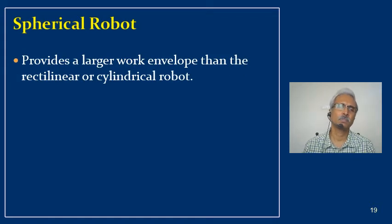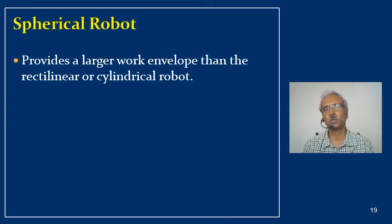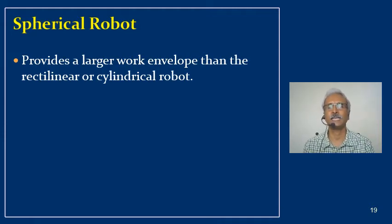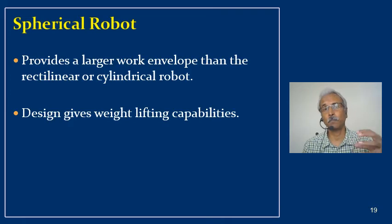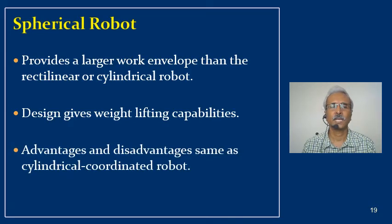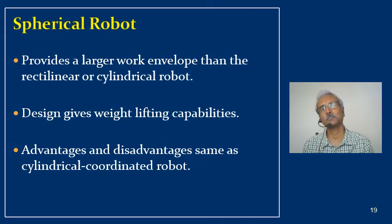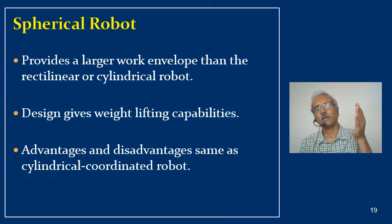Advantages of the spherical robot: it provides a larger work envelope than both rectilinear and cylindrical robots due to its two rotary joints. Its design gives good weight-lifting capabilities, which is critical for industrial payload requirements. Advantages and disadvantages are otherwise similar to the cylindrical coordinate robot — issues of accuracy especially when the arm is fully stretched still apply.